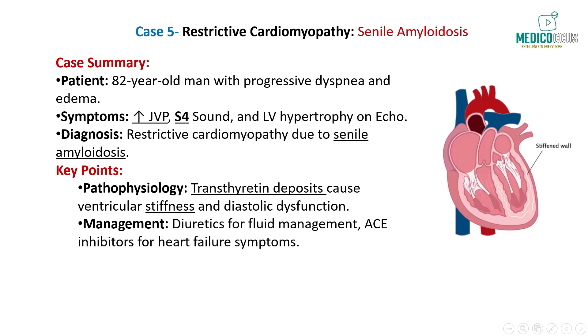Next, consider an 82-year-old man with a history of hypertension who presents with progressive dyspnea, fatigue, and bilateral lower extremity edema. His physical examination reveals elevated JVP with a rapid Y descent, a prominent S4 heart sound, and ascites. An echocardiogram shows left atrial enlargement and marked left ventricular hypertrophy with a normal ejection fraction. Endomyocardial biopsy reveals amyloid deposits consistent with senile amyloidosis. In senile amyloidosis, wild-type transthyretin accumulates in the myocardium, leading to restrictive cardiomyopathy characterized by increased ventricular stiffness and impaired diastolic filling, manifesting as heart failure with preserved ejection fraction. The USMLE Step 1 often tests on the causes of restrictive cardiomyopathy, particularly distinguishing between senile amyloidosis and other infiltrative diseases.